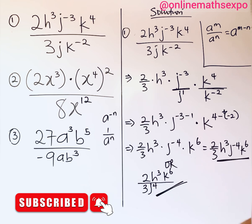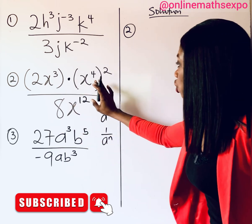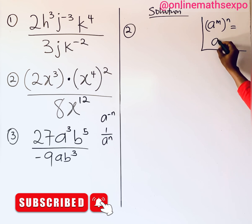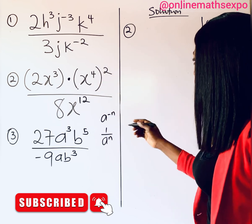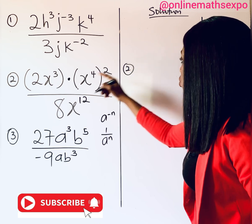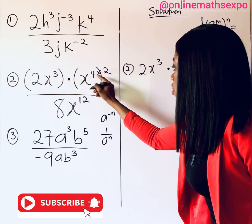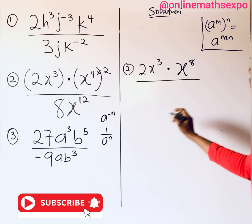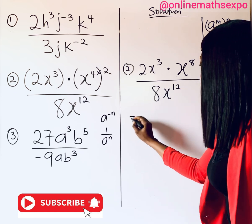Now let's go to question 2. Remember the rule: a to the power of m, raised to the power of n, means you multiply the powers to get m times n. Applying this here, we rewrite the expression. For number 2, we have 2x cubed multiplied by x to the power of 4 times 2, which gives x to the power of 8, all divided by 8x to the power of 12.